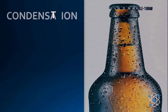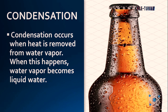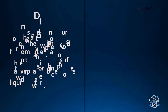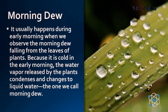Next, we have condensation. Condensation occurs when heat is removed from water vapor. When this happens, water vapor becomes liquid water. An example of condensation is the morning dew. It usually happens during early morning when we observe dew falling from the leaves of plants. Because it is cold in the early morning, the water vapor released by the plants condenses and changes to liquid water — the one we call morning dew.